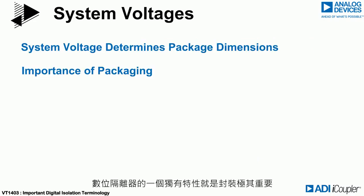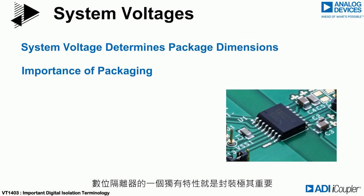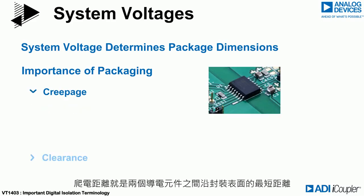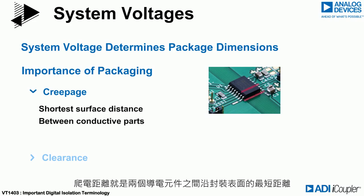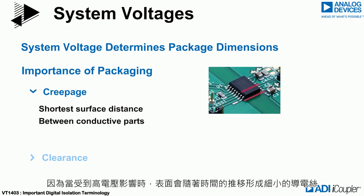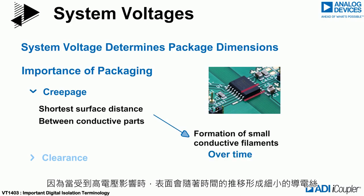A unique characteristic of digital isolators is that the packaging is very important and is in fact an integral part of the device, much more than most semiconductors. The two main package-related characteristics are creepage and clearance. Creepage is the shortest distance across the surface of the package between conductive parts. This dimension is important because surfaces build up small conductive filaments when subjected to high voltages over time.